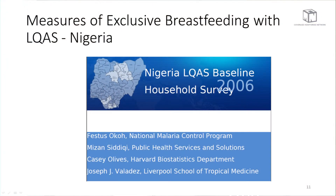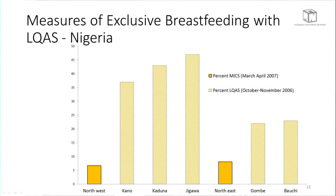Just another quick example: in the Nigeria LQAS baseline household survey of 2006, done in collaboration between Harvard and Liverpool School of Tropical Health, the measure of exclusive breastfeeding produces estimates that are three to nine times higher than those of the regional estimates. There are issues here comparing tangerines to clementines, and issues of seasonality and other confounding factors. But this really doesn't explain the orders of magnitude of difference in these estimates.